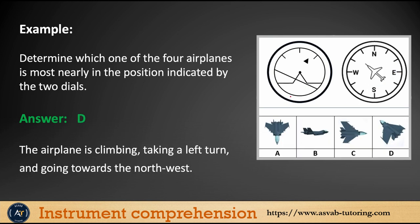In another example, the miniature aircraft is above the horizon, which means it is climbing. The index is on the right side, which means it is taking a left turn, and it is going to the Northwest.